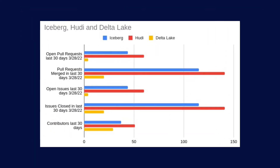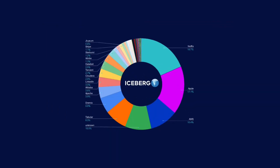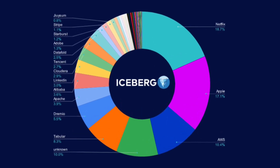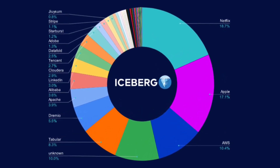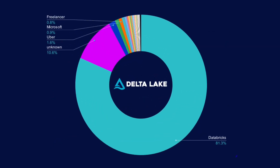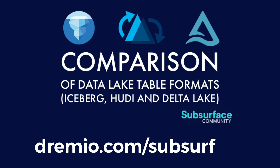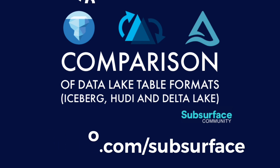We then assess their open source communities by taking a look at their GitHub stats and look at their committer diversity by taking a look at the percentage of contributions by company for Apache Iceberg, Apache Hoodie, and Delta Lake. Head over to dremio.com/subsurface to read this and other great open lake house content today.